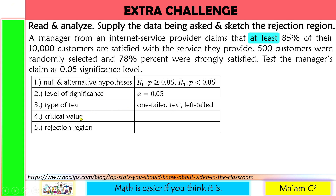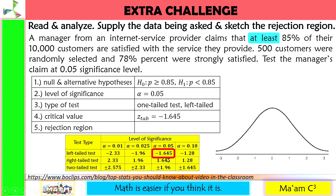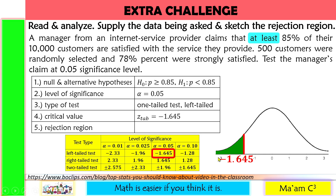The critical value — let's recall our table. Left-tailed at 0.05, our Z-tab is negative 1.645. Let us sketch the curve, locate negative 1.645, label it, and shade the left tail. We can now clearly see the rejection region, and that is Z is less than or equal to negative 1.645.